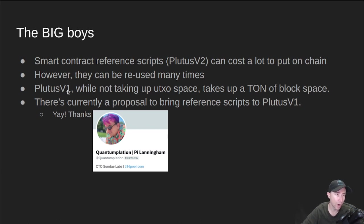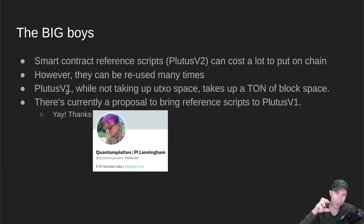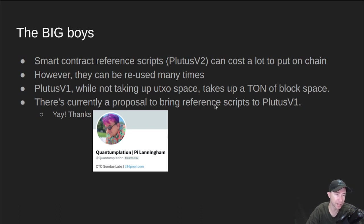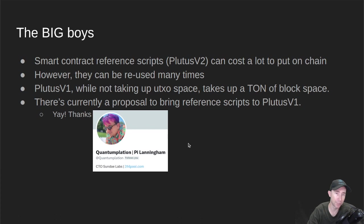In Plutus v1, scripts don't take up a lot of UTXO space because all they had was the datum hash on the UTXO. But they take up a ton of block space because the actual script had to be included in the transaction every time it was run. So right now, anybody using Plutus v1 is causing chain bloat. There's currently a new CIP proposal to bring reference scripts back to Plutus v1 — thanks to PyLanningham for bringing that to everyone's attention. It won't take a lot of work and will probably get in for the Conway hard fork. It doesn't reduce ledger bloat, but it does reduce block space, so we'll get a big bonus from that.